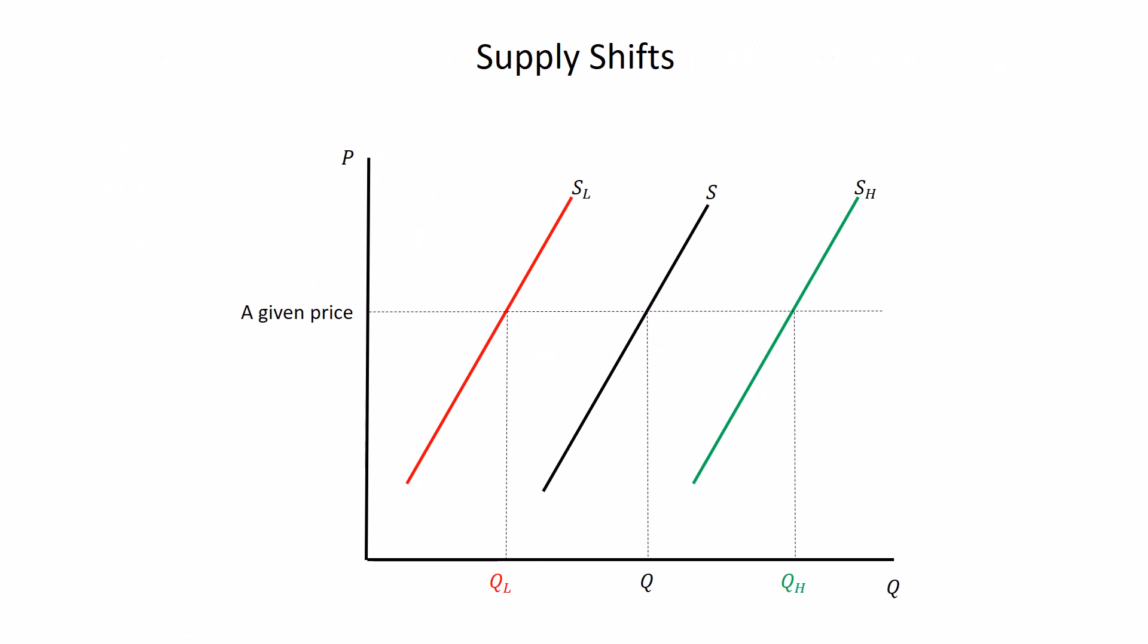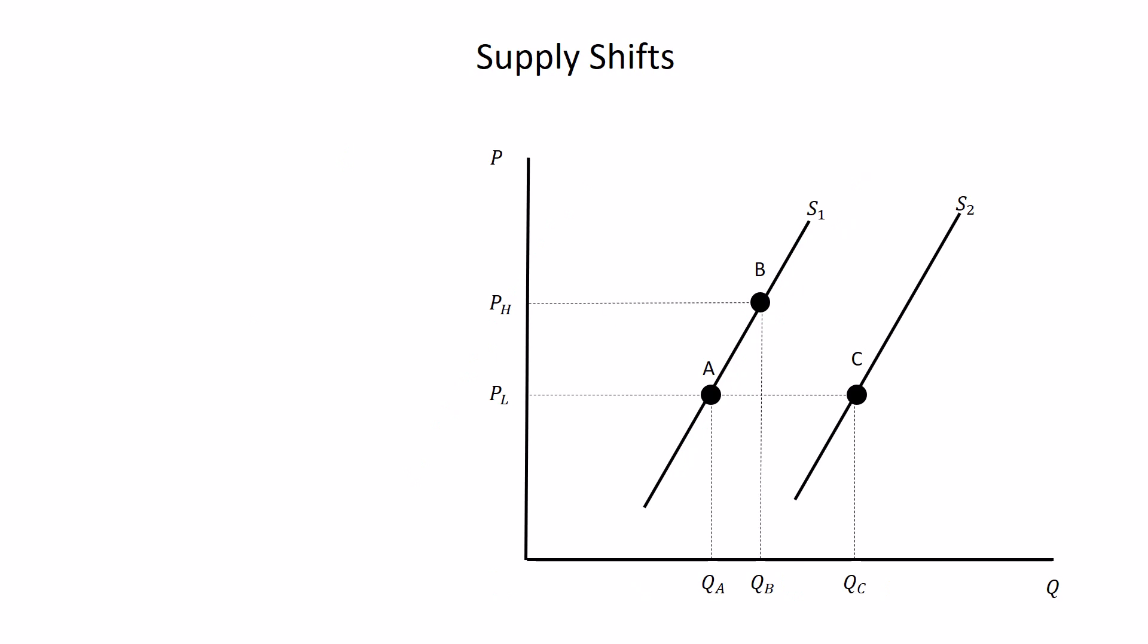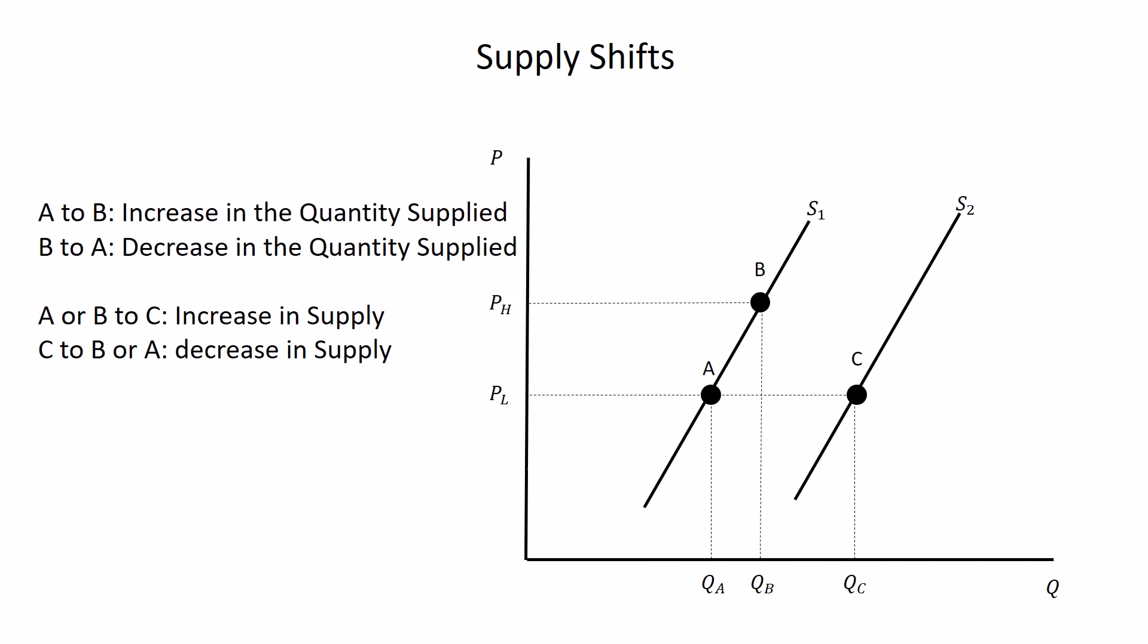This is the one where you really don't want to get confused about up versus down. Because if you drew a supply curve that was up and called that an increase, you'd be wrong. Because it would be lower quantities at every price. If the price level increases from P low to P high, then the quantity supplied will increase from QA to QB. If you decrease the price, then the quantity supplied will decrease. If you're just changing price, you stay on the same curve. Or if we increase supply by moving from points A or B to point C, then we're on an entirely new supply curve.